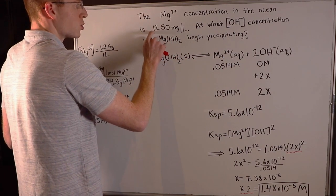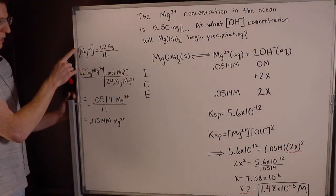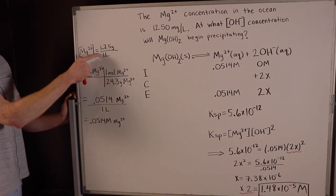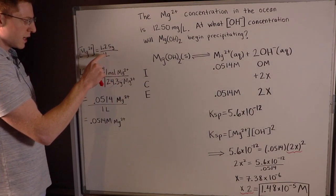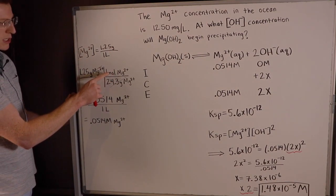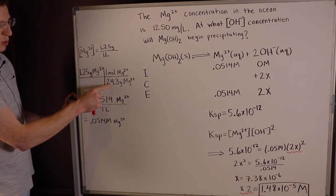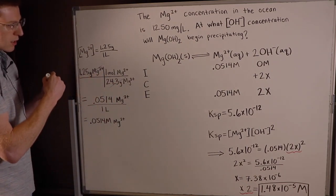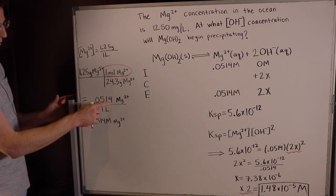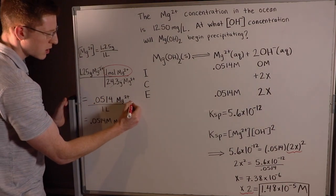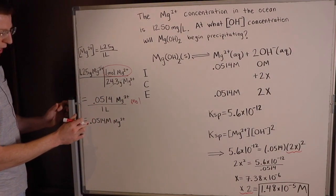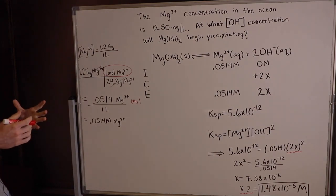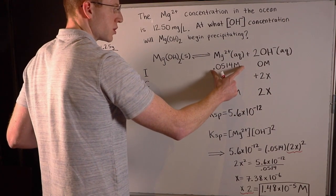To convert 1,250 milligrams per liter to molarity: 1,250 mg/L equals 1.25 g/L. Then 1.25 grams divided by 24.3 grams per mole — the molecular weight of magnesium ions — gives the moles of Mg²⁺. This works out to 0.0514 molar, which I put as the initial concentration of Mg²⁺. I'm assuming we started with no hydroxide.